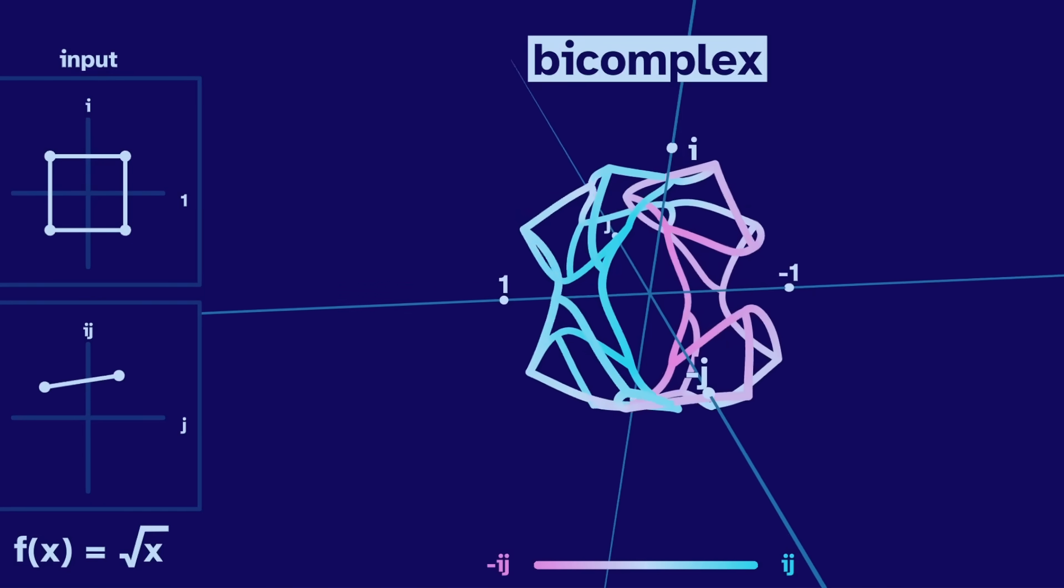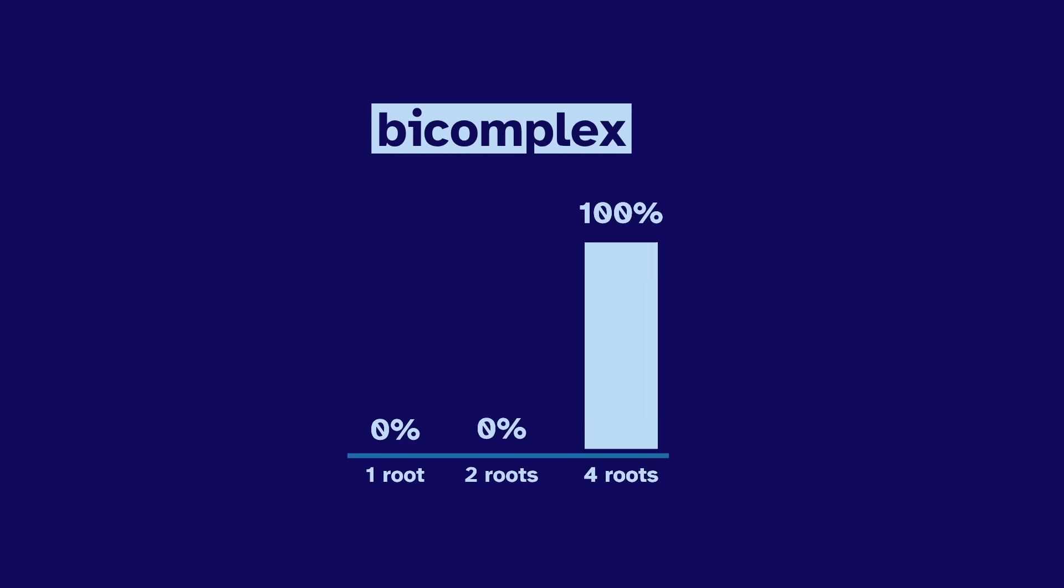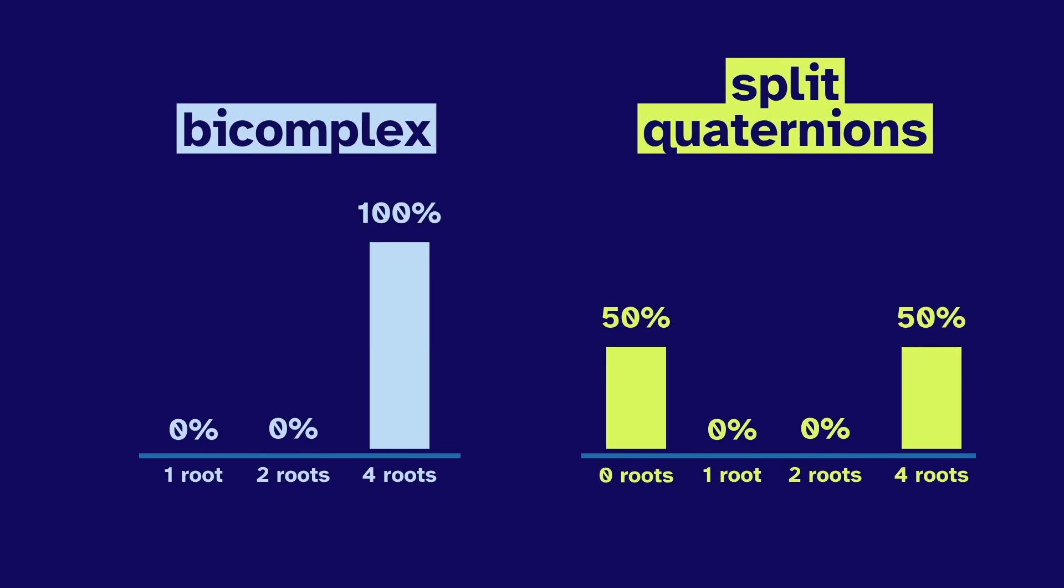Their cube root is always defined, and it looks really cool. It's a lot denser than the input cube because almost every number has four roots. It's a much better distribution than the split quaternions.